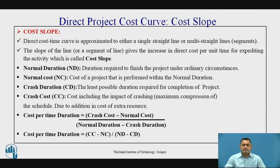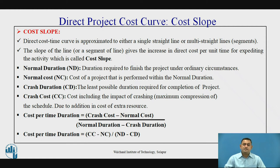The normal cost is the cost associated with the particular activity executed during the normal duration. The crash duration is the least possible duration required for the activity to complete. The crash cost is the cost determined when we crash the activity — it is the additional cost associated with the activity as we reduce its duration, since extra resources must be assigned. The formula for cost slope is: Cost Slope = (Crash Cost − Normal Cost) / (Normal Duration − Crash Duration), which helps in selecting activities for crashing.